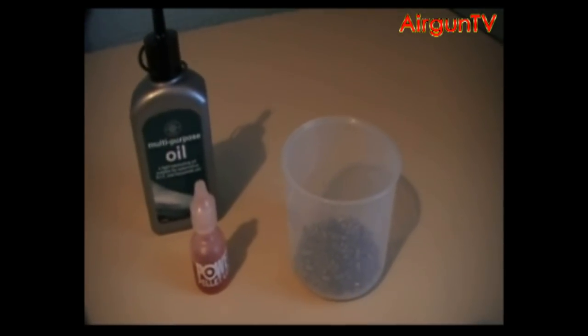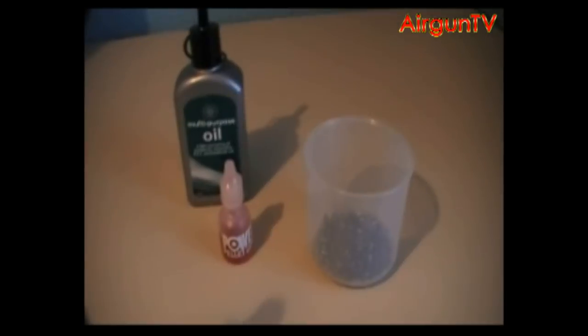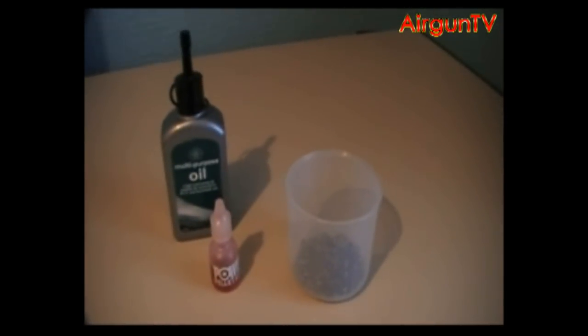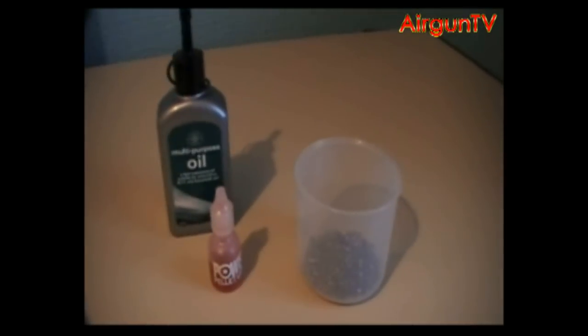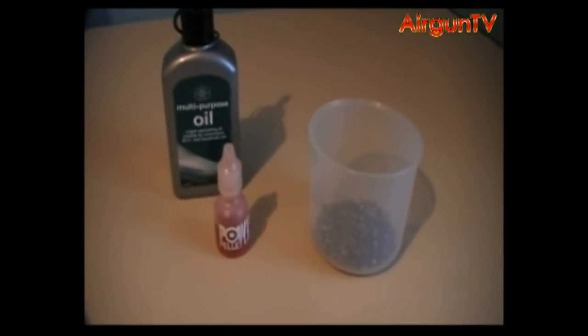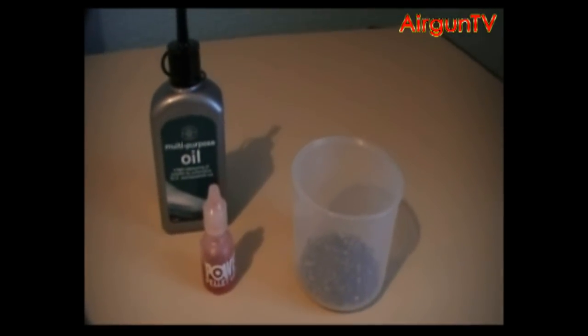If you've got a spring gun or spring rifle, use a wax-based furniture polish. They usually come in sprays. Just spray it onto a cloth, tip your pellets onto the cloth, and give them a quick rub around so they get coated in the wax. That's for a springer.